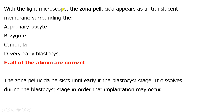Under the light microscope, the zona pellucida appears as a translucent membrane surrounding the primary oocyte, the zygote, the morula, and the very early blastocyst. It only dissolves during the late blastocyst stage so that implantation can occur. The loss of the zona pellucida is a process we call hatching, and it is hatching that allows implantation to occur.